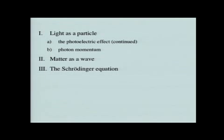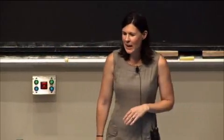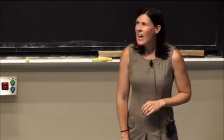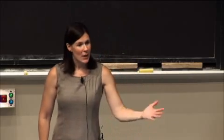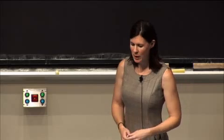We're going to finish up with a few points about the photoelectric effect today, and then we're going to try a demo to see if we can convince ourselves that the calculations we make work out. We'll also talk about photon momentum as another example of light behaving as a particle. After that, we'll move on to matter as a wave, and then the Schrödinger equation, which is a wave equation that describes the behavior of particles by taking into account the fact that matter also has wave-like properties.